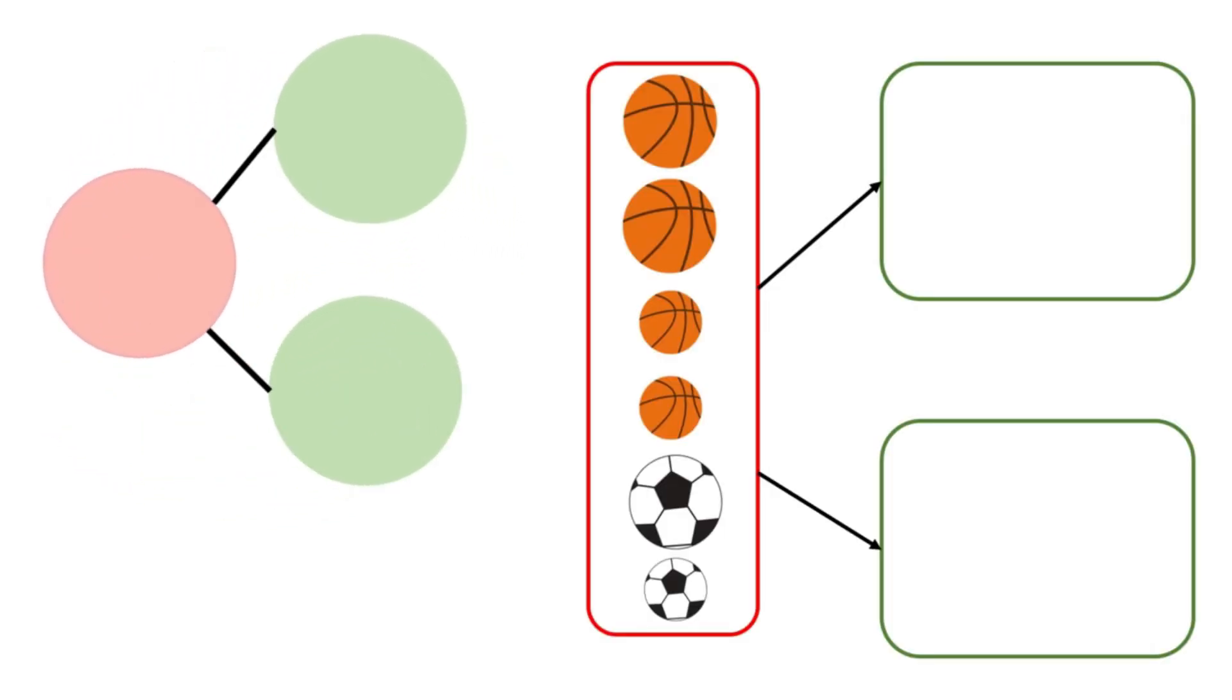Let's turn the number bonds another way. How many balls are there altogether? There are one, two, three, four, five, six balls altogether. Six is our whole. That's right.